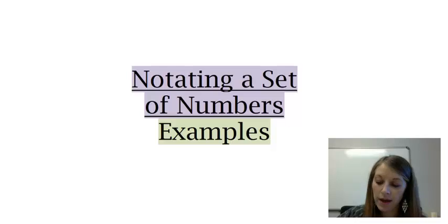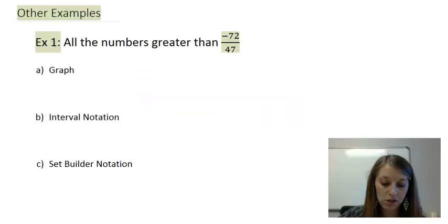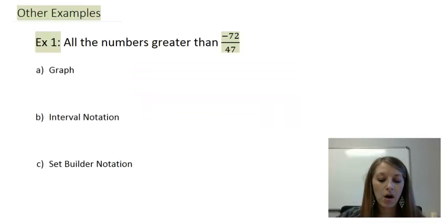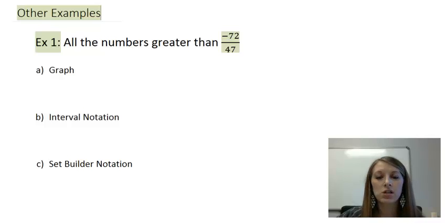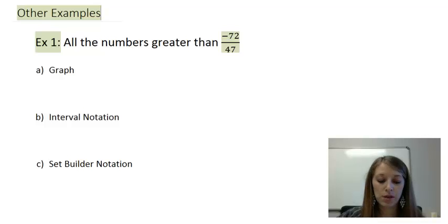Here is the first example: all numbers greater than negative 72 over 47. I suggest that you pause the video and see if you can do all three notations with this example.